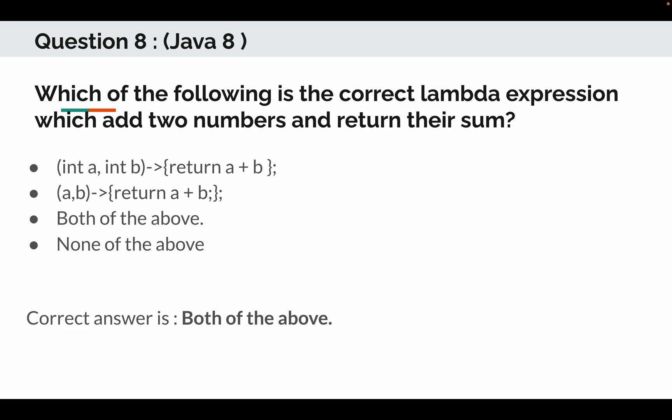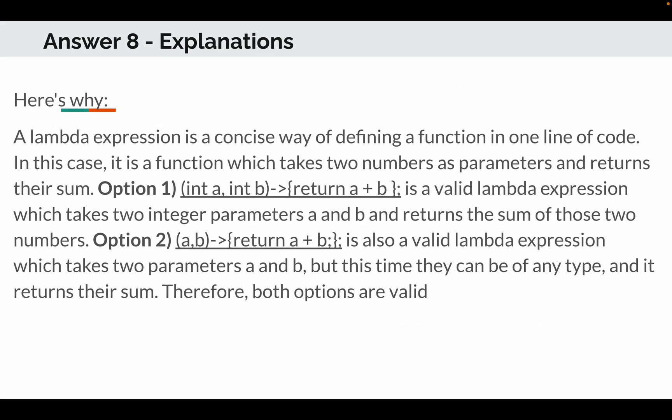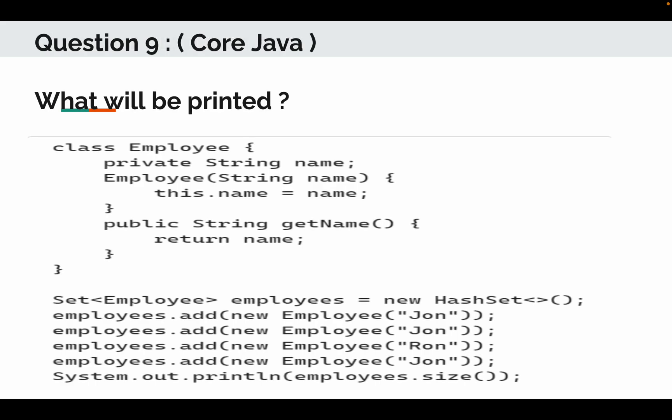The correct answer is both of the above. A lambda expression is a concise way of defining a function in one line of code — in this case, a function that takes two numbers as parameters and returns their sum. Option one takes two integer parameters a and b and returns their sum. Option two is also a valid lambda expression taking parameters a and b, but they can be of any type, and it also returns their sum. Therefore, both options are valid.